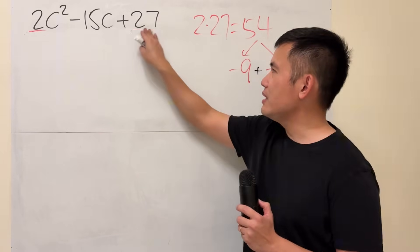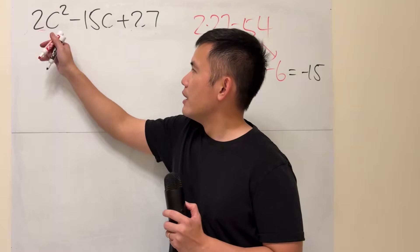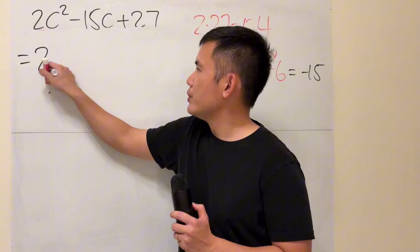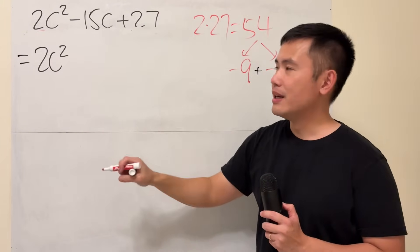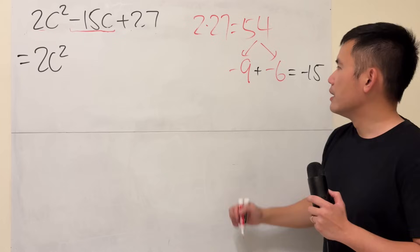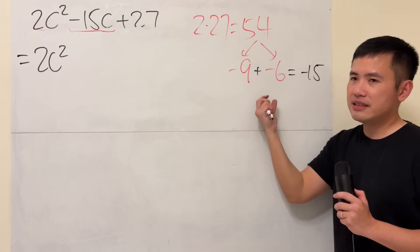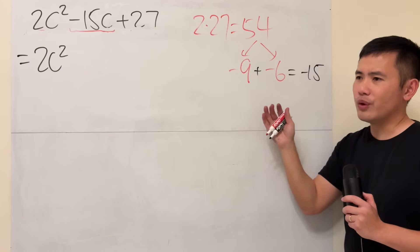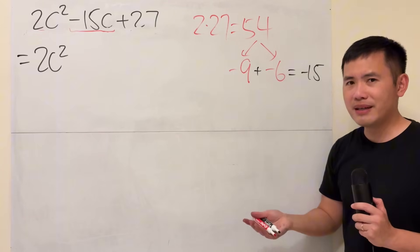Now here is the key of doing this question. The first term stays, 2c squared, and the last term also stays. But for the middle term, we are going to break it down. You can write it as negative 9c minus 6c, or negative 6c minus 9c, doesn't matter.